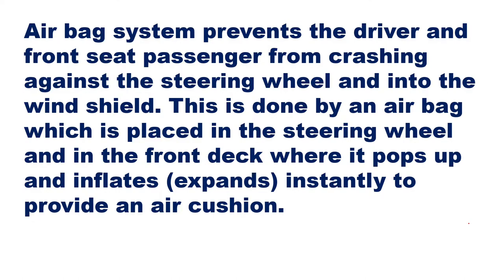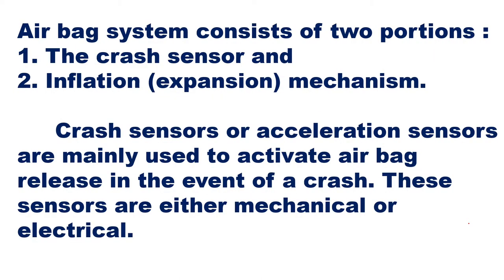There will be an air cushion which will come in between the person — the driver and the passenger — and the front part of the car, that is your dashboard. An airbag system consists of two portions. One is the crash sensor, which senses the accident or crash that has happened with the vehicle. The sensor is at the front part of the car. The second part is the inflation, that is the expansion mechanism, where a non-harmful gas is blown into the balloon so that it blows up and comes in between the person and the front part of the car.